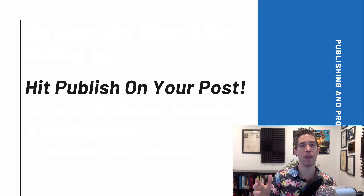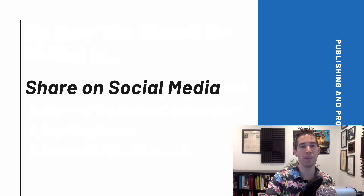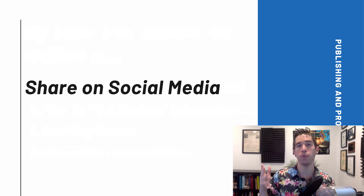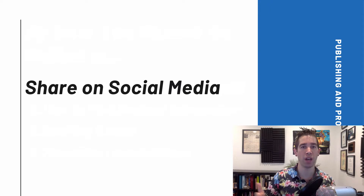So once you hit publish on that blog post, it's time to share this content on social media. We're going to use the templates that we came up with in the previous lesson on social media, making sure to use those hashtags and tag the people that you've mentioned in your blog posts. Once you've created your social posts, you may want to use a scheduling tool like Buffer so you can keep scheduling posts to go out on social media over time.